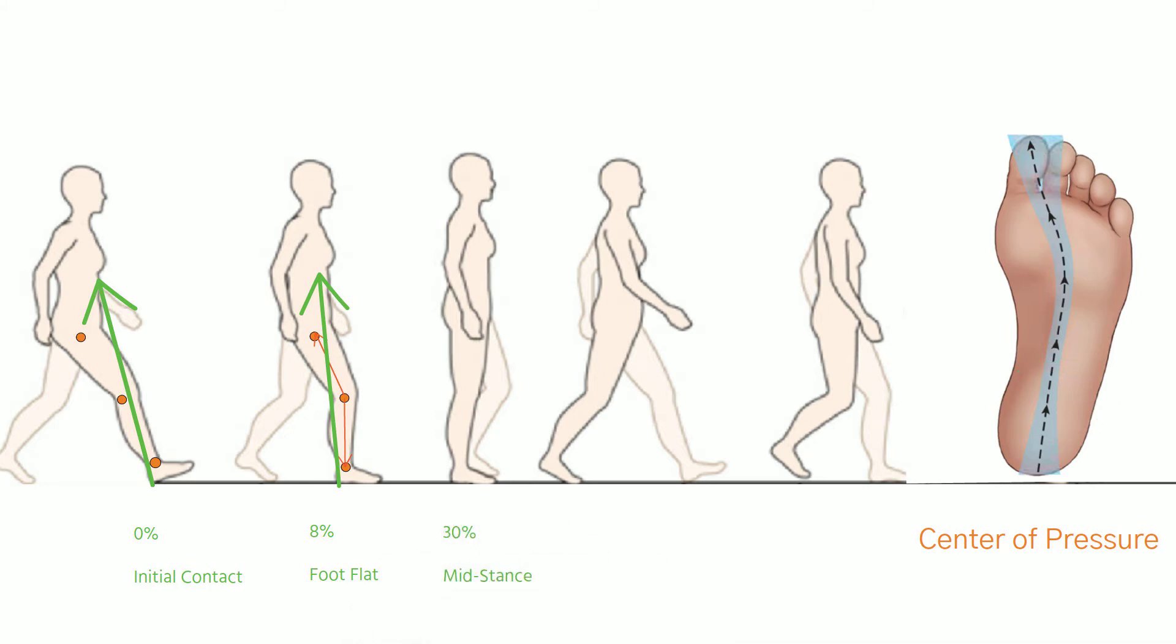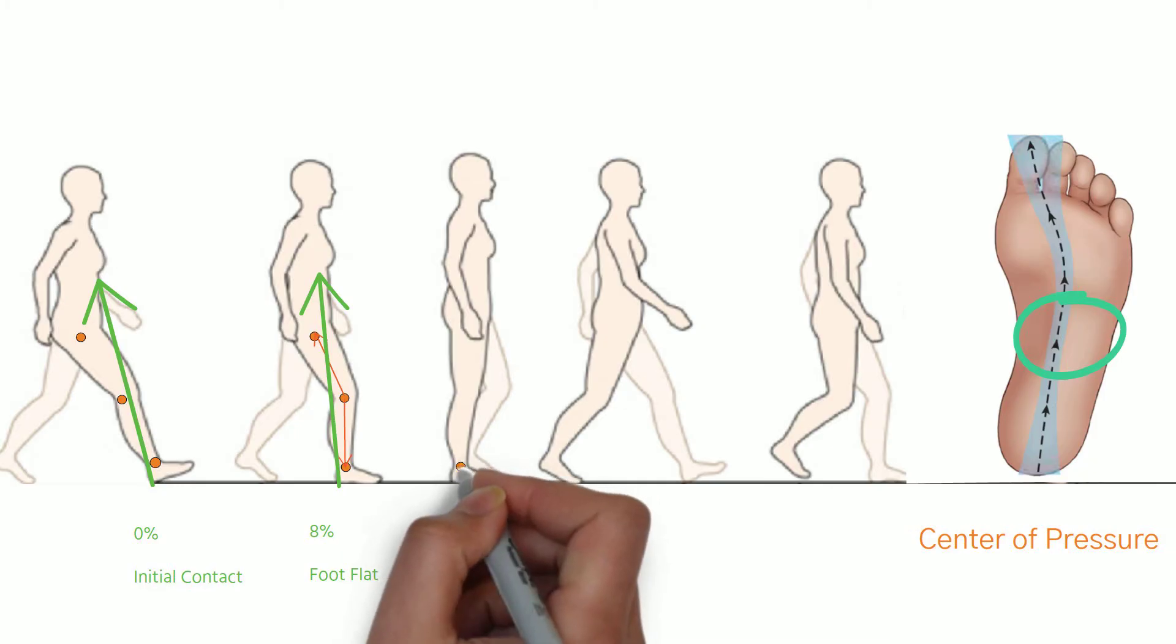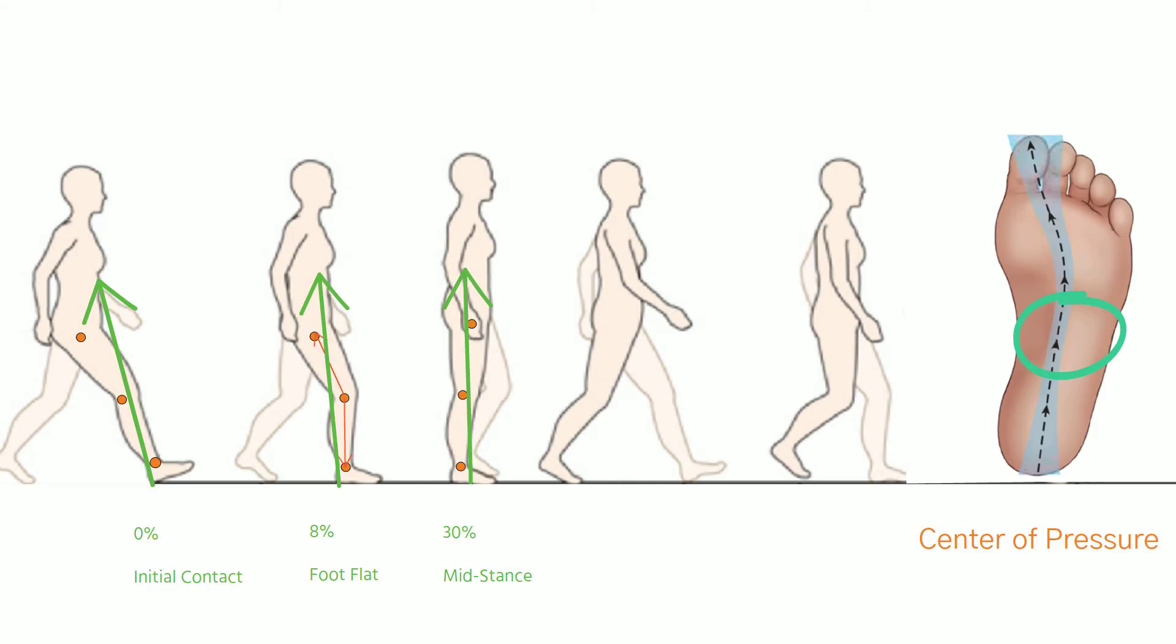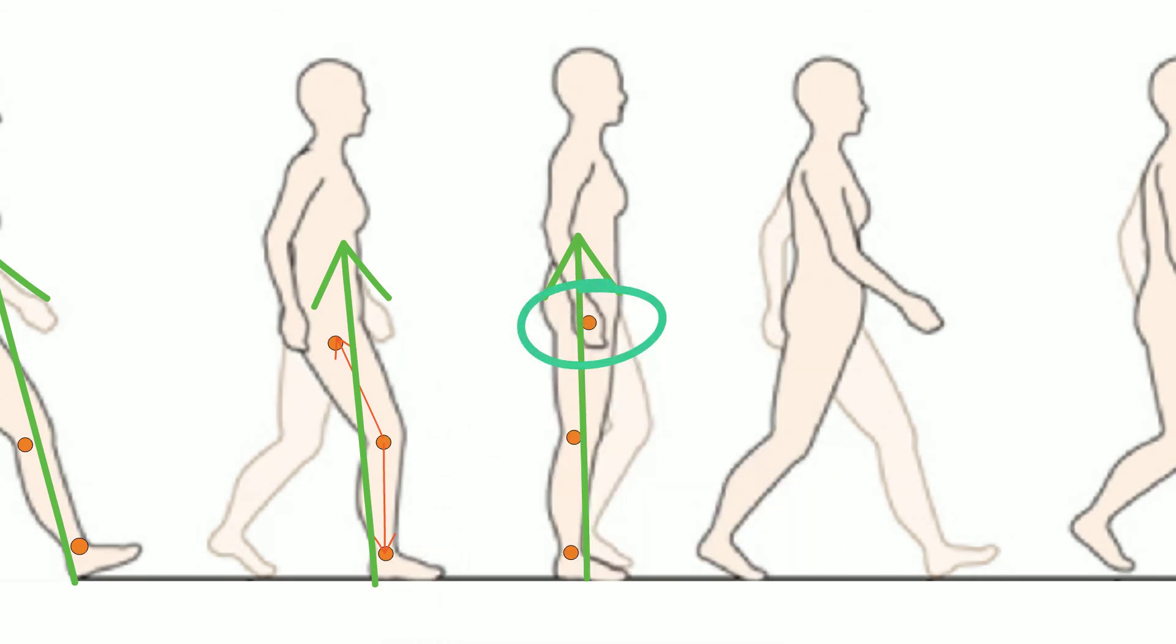Mid stance is analogous to a neutral stance, where the ground reaction force and line of gravity have coincidental action lines. Now the body weight is transferred over the foot. This creates a change in ground reaction force at each joint. The ground reaction force now moves anterior to the ankle, anterior to the knee joint and posterior to the hip.